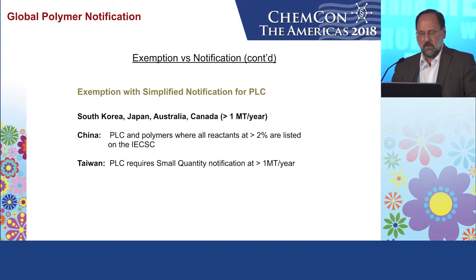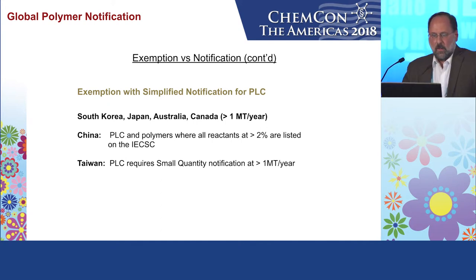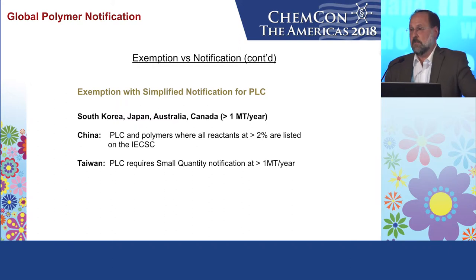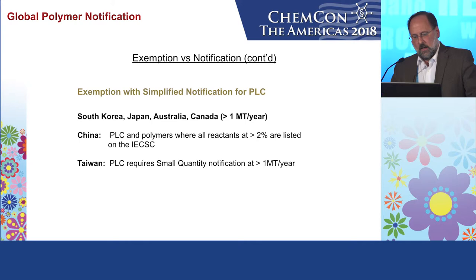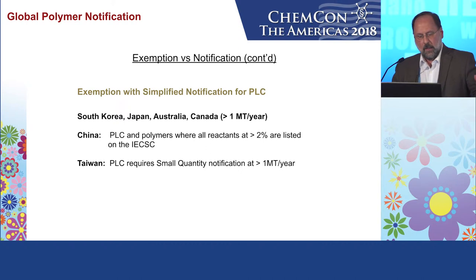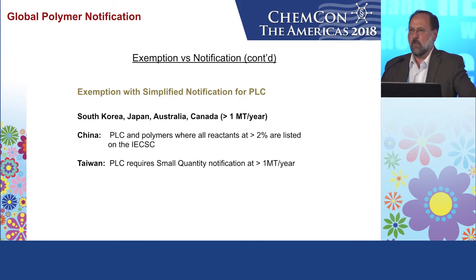In South Korea, Japan, Australia, and Canada at greater than one metric ton per year, you have to do a simplified notification — it's a lot easier than a full notification, but you still have to do it. In China, polymers of low concern where all reactants greater than 2% are listed on the China inventory are eligible. Taiwan PLC requires a small quantity notification at greater than one metric ton per year. The key point: all jurisdictions have a low concern category, and you're either eligible for exemption or do a limited notification.